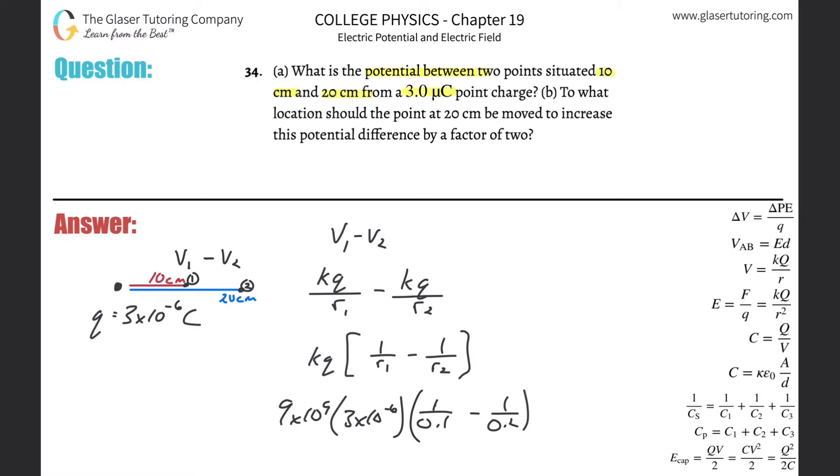So this I get about 135,000, or 1.35 times 10 to the 5th. That's in terms of volts. That's the difference.